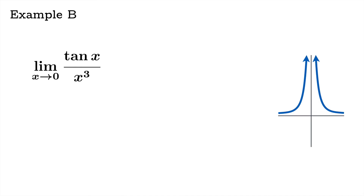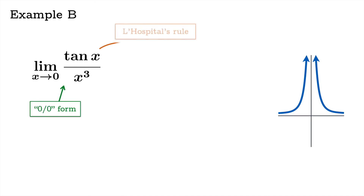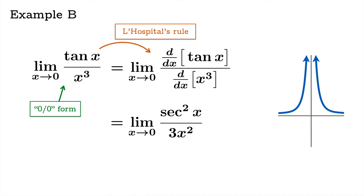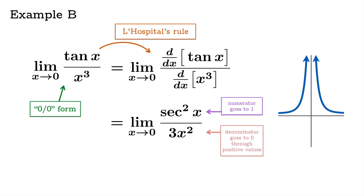For tan(x) over x cubed, we've verified this is a zero over zero form, so L'Hôpital's rule is available. The new limit we get is sec²(x) over 3x² as x approaches zero. The numerator function goes to 1 while the denominator function goes to zero, passing through positive values, and therefore this limit diverges to infinity — once again matching what we saw previously.